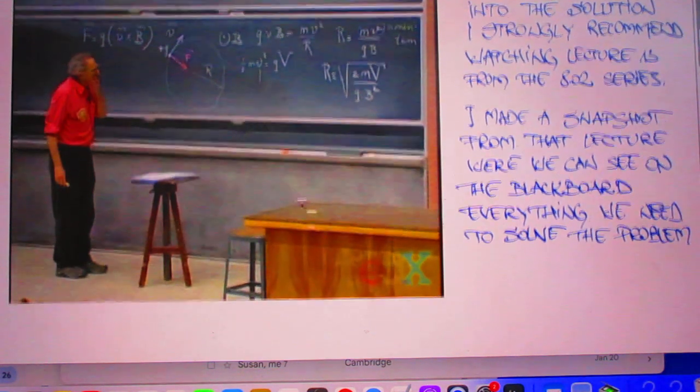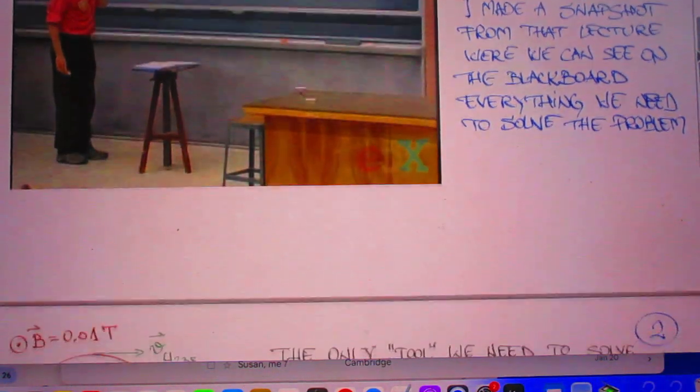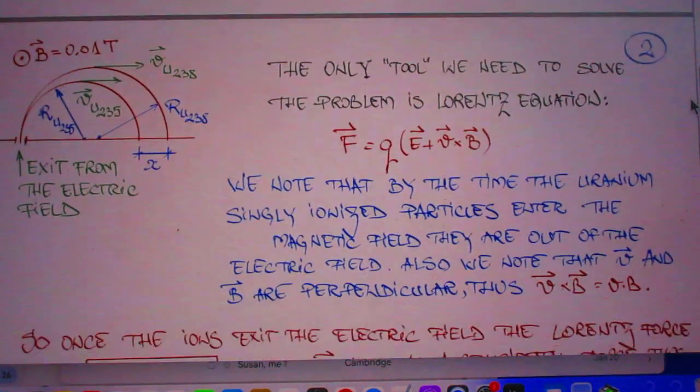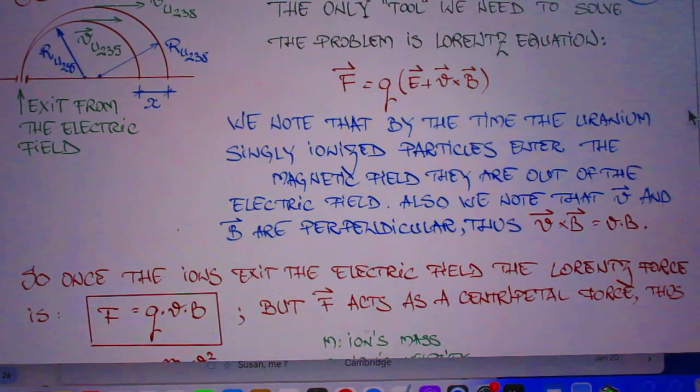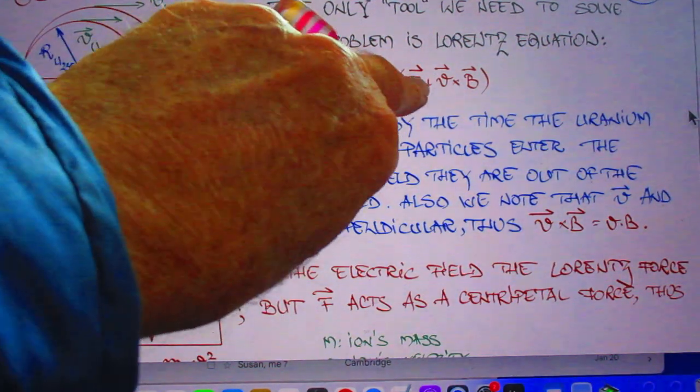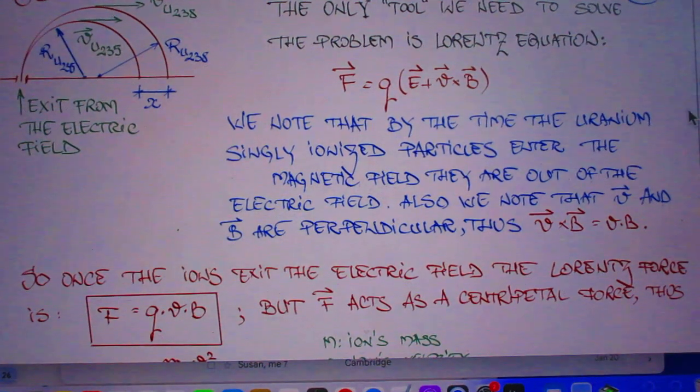So let's now go over Oregon's solution in a bit more detail. We need to solve the problem of the Lorentz equation. And he gives here the Lorentz equation that includes the force on the charge q due to E field. And then when the charge is moving in the B field, you get the V cross B term as well.